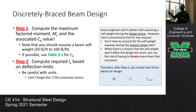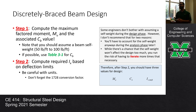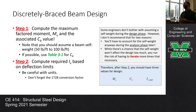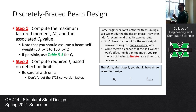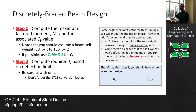Some engineers don't bother assuming a self-weight during design simply because the loads the beam has to withstand are far greater than the self-weight. I still think you should do it - it results in potentially less iteration down the road, and you've got to account for it in the analysis phase anyway. Then you compute your required moment of inertia based on your deflection limits. At the end of step two, you should have at least three values: CB, the required moment MU, and the required IX.